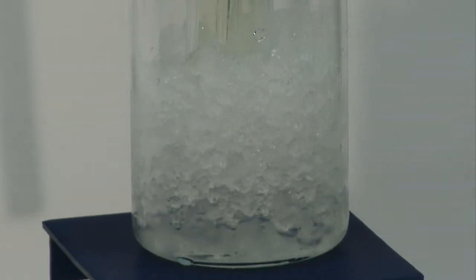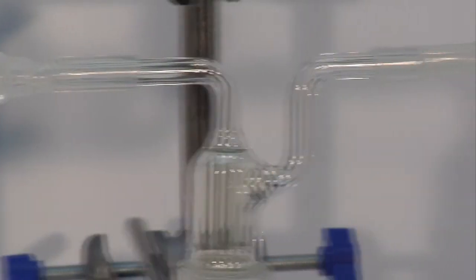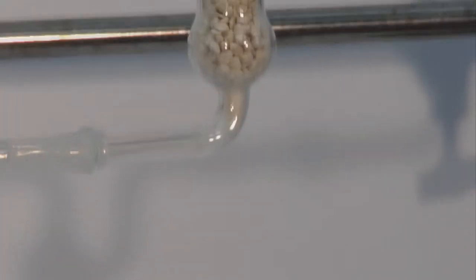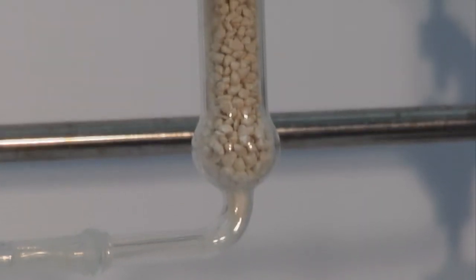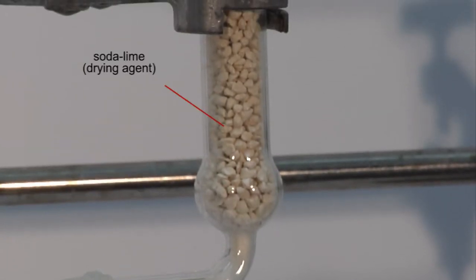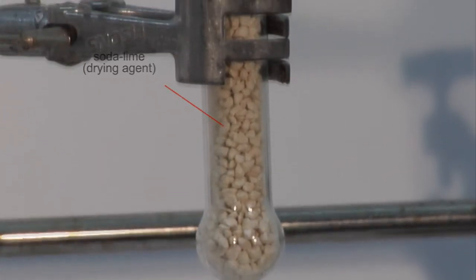Covalent chlorides which are formed in the reaction hydrolyze very vigorously when exposed to moist air, and so water is prevented from entering the flask by using soda lime.